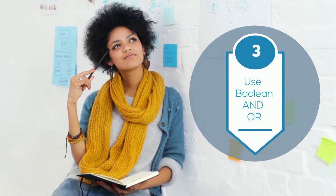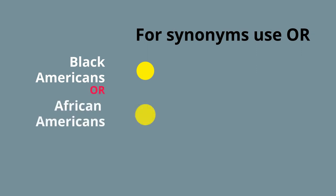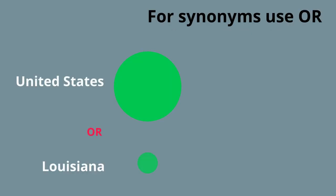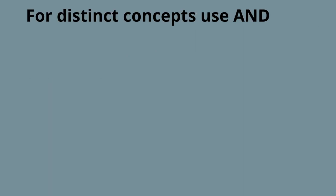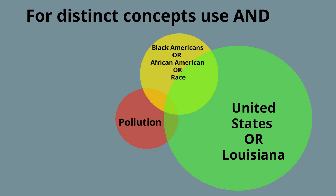The third step in creating a good search statement is using Boolean logic — AND and OR. AND is used to connect distinct concepts, and OR is used to link synonyms. For synonyms, use OR between each of the various ways to describe a concept: Black Americans OR African Americans OR race. When searched with OR, you will get a larger pool of records. For geography: United States OR Louisiana. To connect your three concepts, use AND — that finds records containing all three concepts, represented by the triangle in the middle of a Venn diagram.